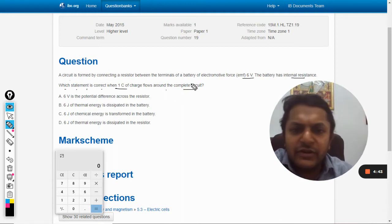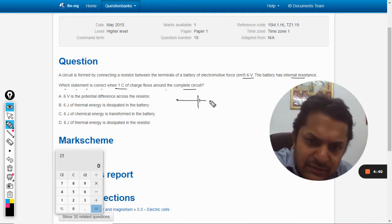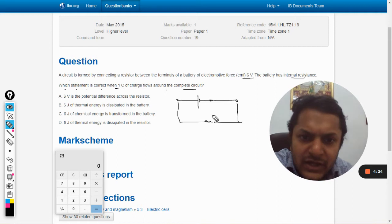First of all, let us draw the circuit. So this is the battery and this is the internal resistor. Now it is connected across an external resistor R, and these values are not given to us.